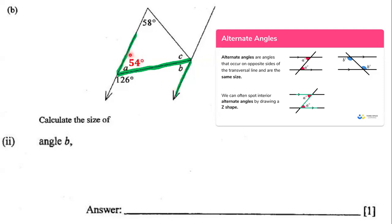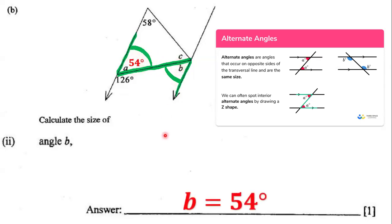We already know from the previous part that angle A is 54 degrees. If we find the Z shape, the angles on the inside — angle A and angle B — are alternate angles, or alternate interior angles. They are inside of the Z. Alternate angles are equal, so if angle A is 54 degrees, that means angle B is also 54 degrees, because alternate angles are equal in measure.